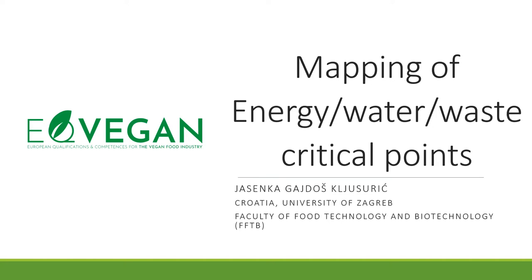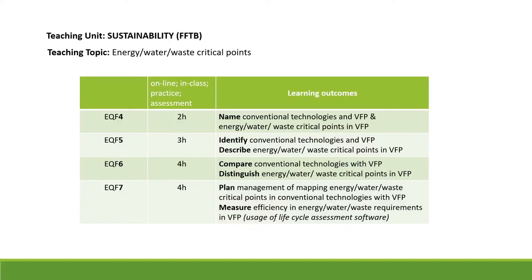This lecture is aimed at the topic of mapping energy-water based critical points, prepared under the teaching unit on sustainability. It is designed to be taught across all four education levels. At education level four, students should be able to name conventional technologies in vegan food production and processing regarding energy-water based critical points. At education level seven, the expected learning outcomes include planning and management of mapping energy-water based critical points in conventional technologies, having an overview of new technologies, and measuring efficiency regarding those critical points.